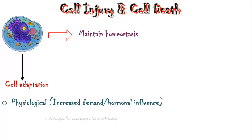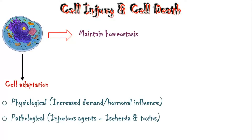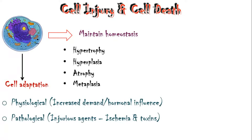Or they could be pathological, such as injurious agents like ischemia and toxins. There are four types of cell adaptation: hypertrophy, hyperplasia, atrophy, and metaplasia. I will discuss about them in detail in another video.